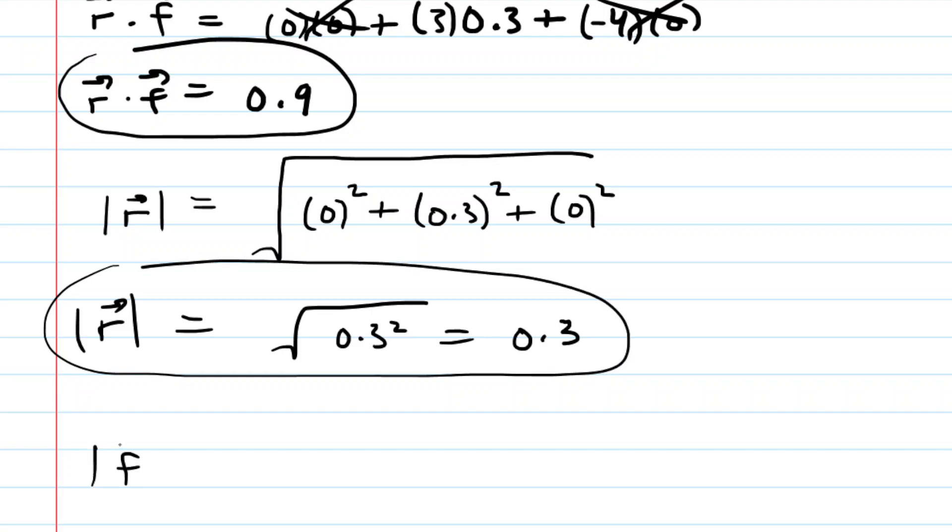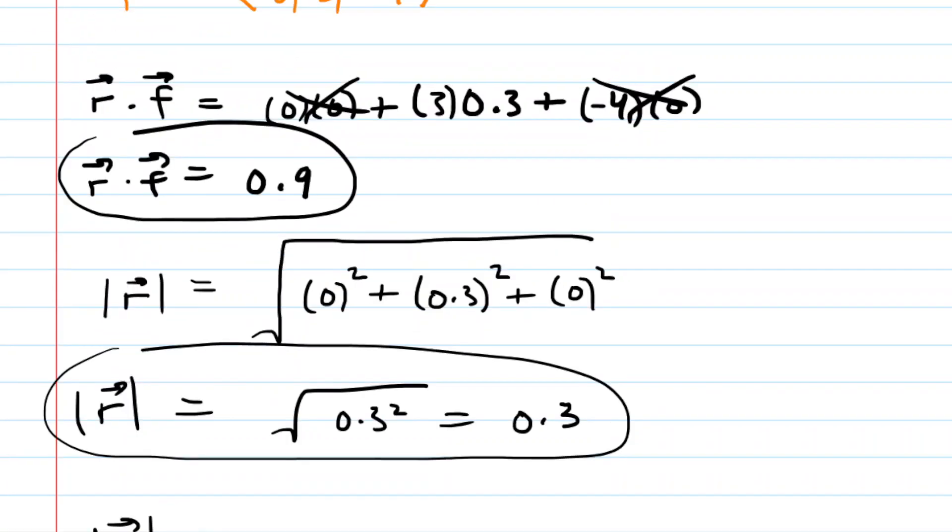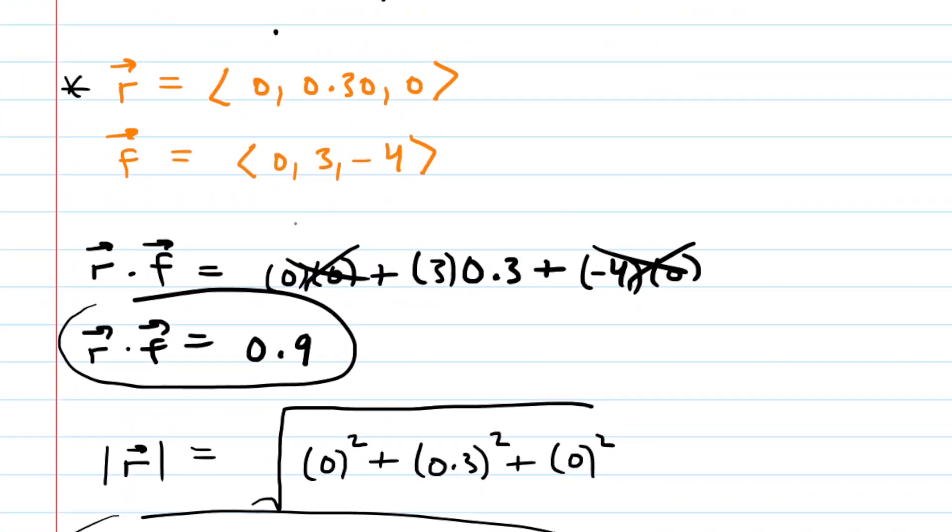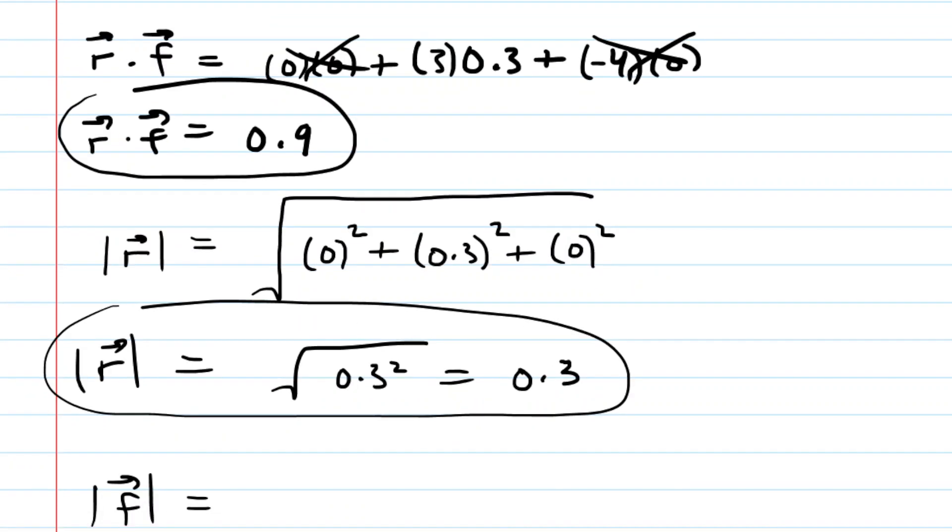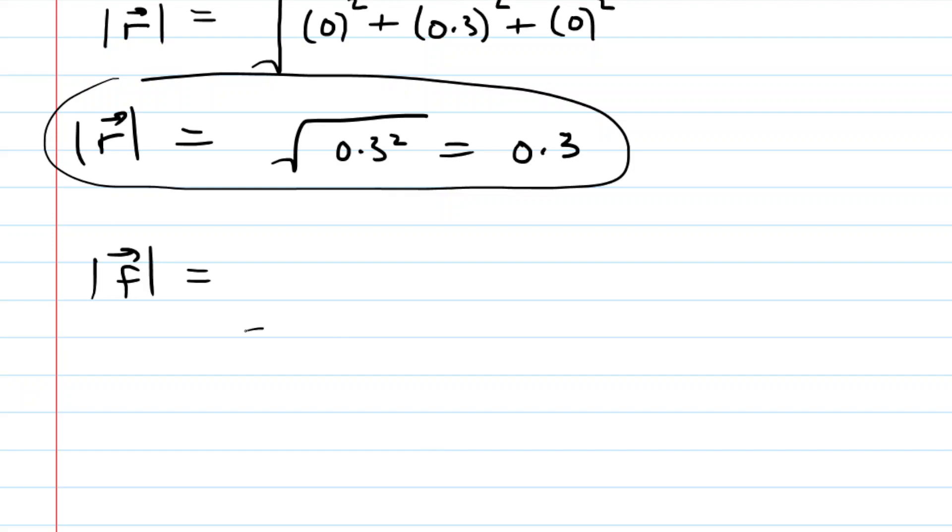We also need the magnitude of that directional force vector. Let's just go back up and look at those coordinates. It was 0, 3, and -4 right there. Those are the components, I should say. 0, 3, and -4. So here we go. We're going to have a square root of 0² + 3² + (-4)². When you simplify under the radical, you're going to get 9 + 16, which is 25. And so we can see that the magnitude of that directional force vector is equal to 5.